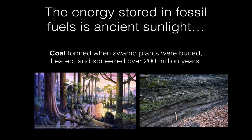Coal is formed from the bodies of swamp plants that were buried, squeezed, and heated by rock layers for over 200 million years. The layers of coal you see in coal mines go back about 200 to 275 million years, formed from swamp plants like ferns and tree ferns. If you ask me in class, I can show you a piece of coal or slate where you can actually see the prints of fern leaves still in it after 250 million years.